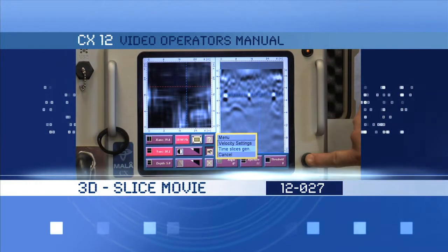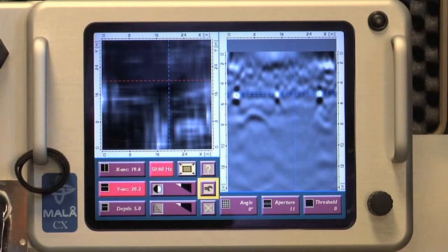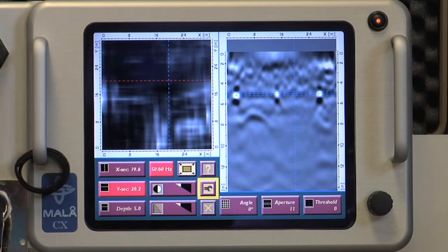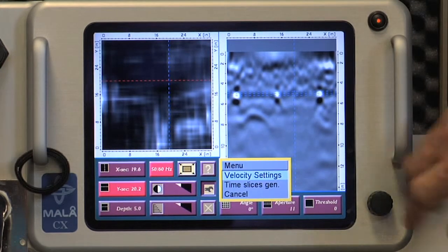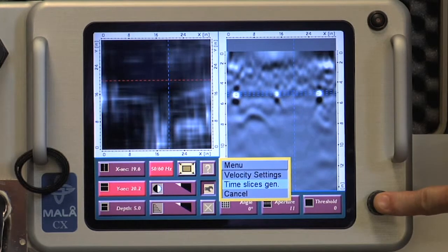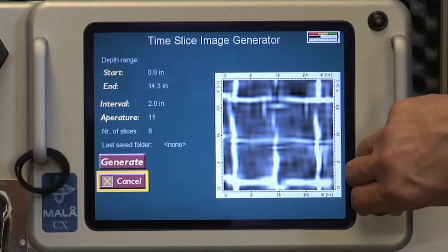3D Slice Movie: Using multiple screen images, a time slice movie of the 3D data set can be created. To create a 3D slice movie, select the wrench icon from the grid project processing screen. From the drop-down menu, select Time Slices Gen to access the Time Slices Image Generator screen.